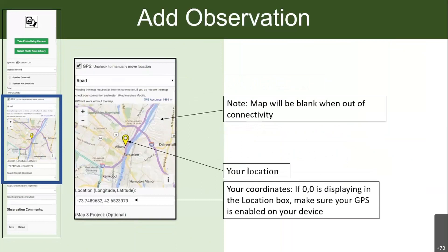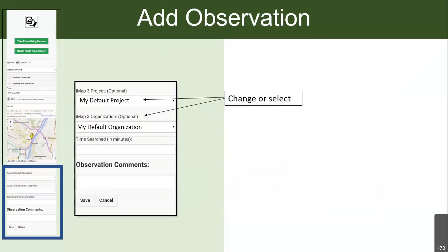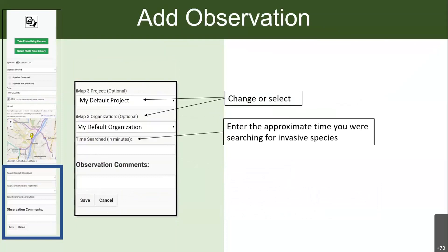Everyone can select 'fake species' and indicate whether you detected the species or not. As you scroll down it will show you a map — this might be blank if you're outside of connectivity, but the way to tell whether GPS is working is the coordinates box. If you have '0, 0' that means you need to make sure GPS is enabled. If it's displaying a long number then you're all set even if the map is blank. Your default projects will show up and you can change them.